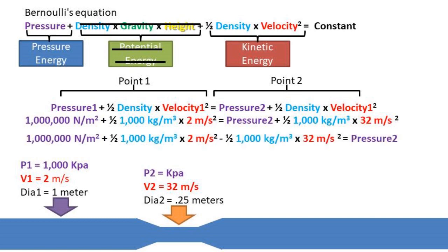After we plug in all of our numbers and rearrange the formula, we get that the pressure at point 2 is 490 kilopascals or 490,000 newtons per meter squared. This means that if the diameter decreases, the pressure also decreases.